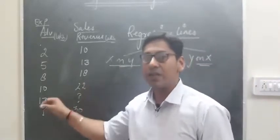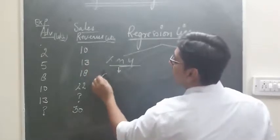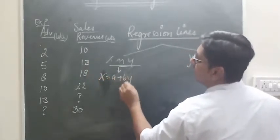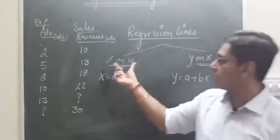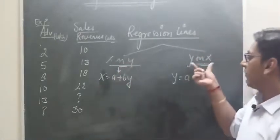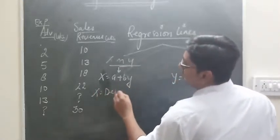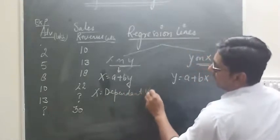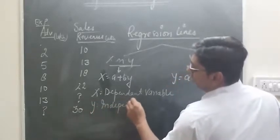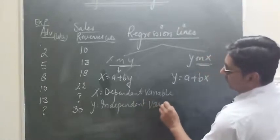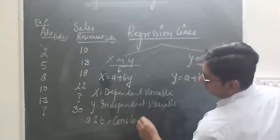Now, for x on y, the regression line is x equals to a plus by. And for y on x, y equals to a plus bx. In the x on y equation, x is the dependent variable and y is the independent variable. A and b are constants.